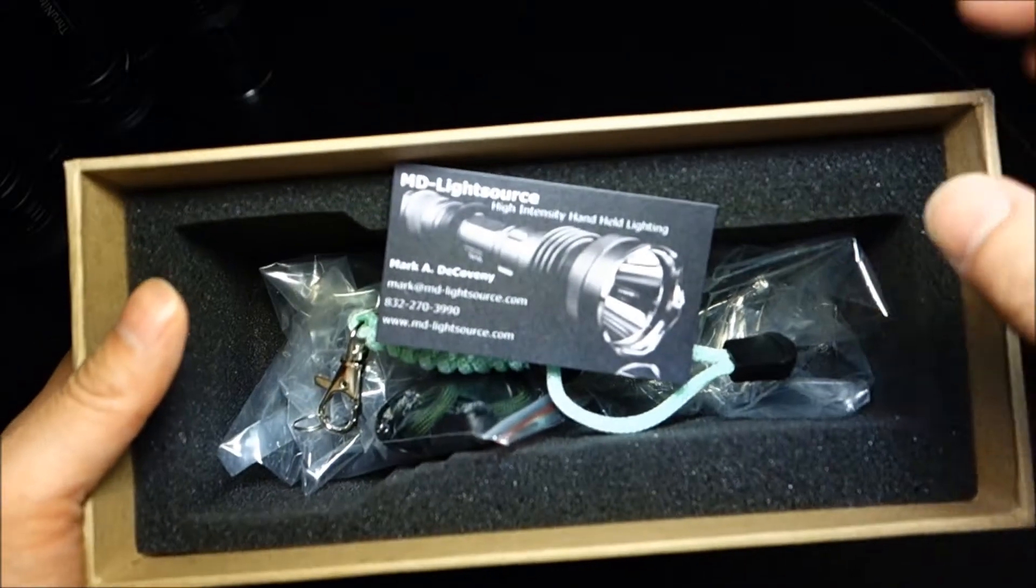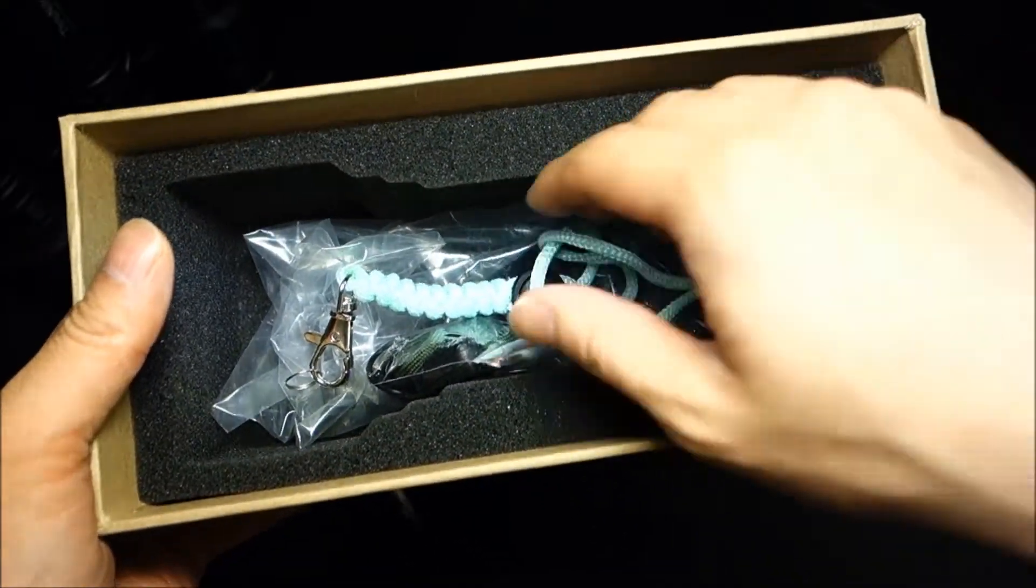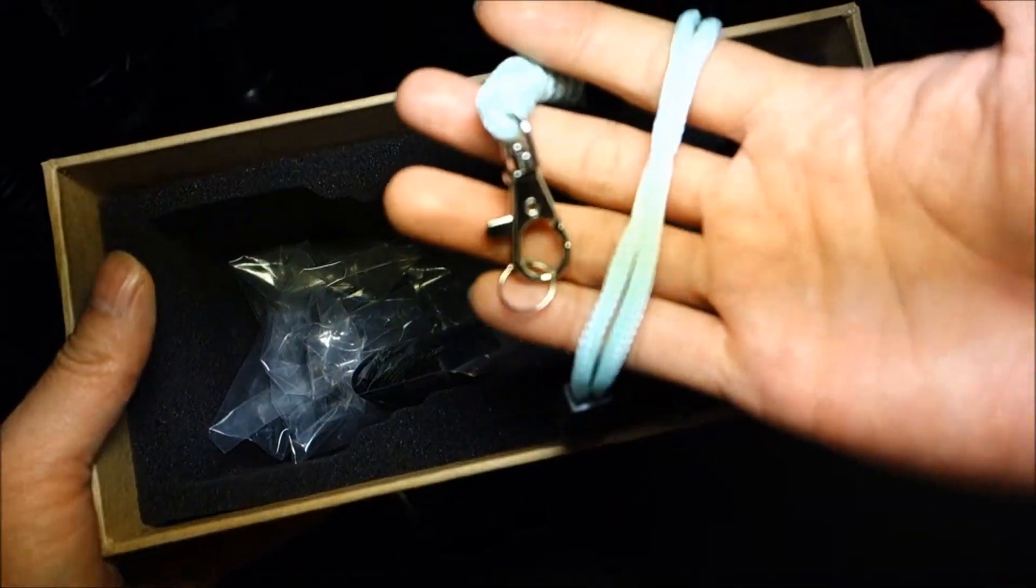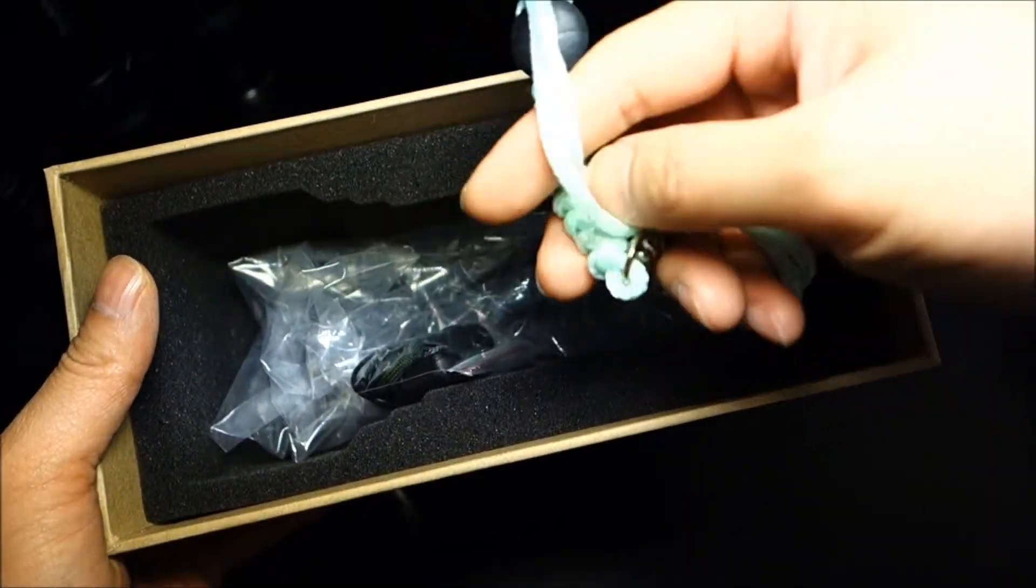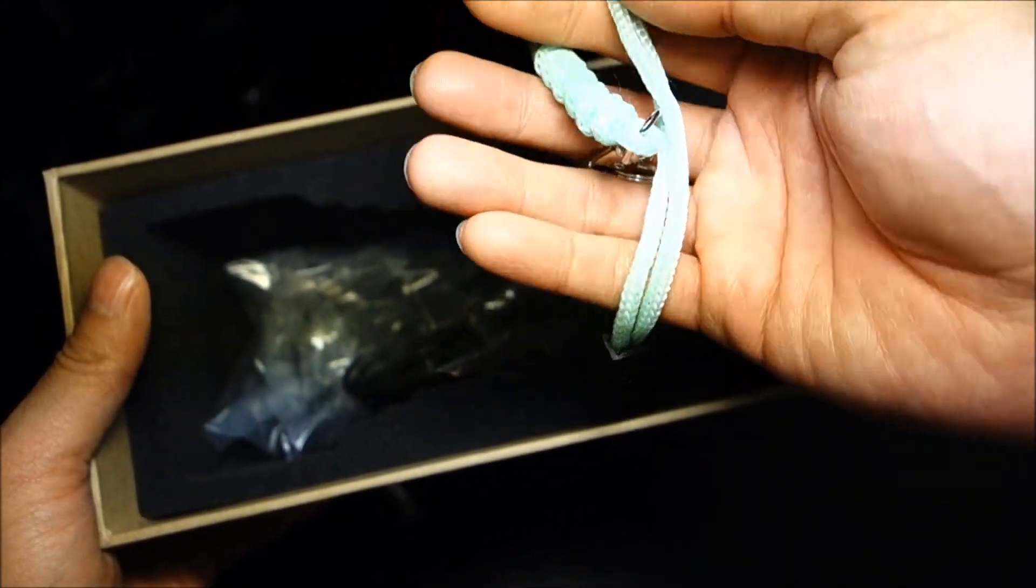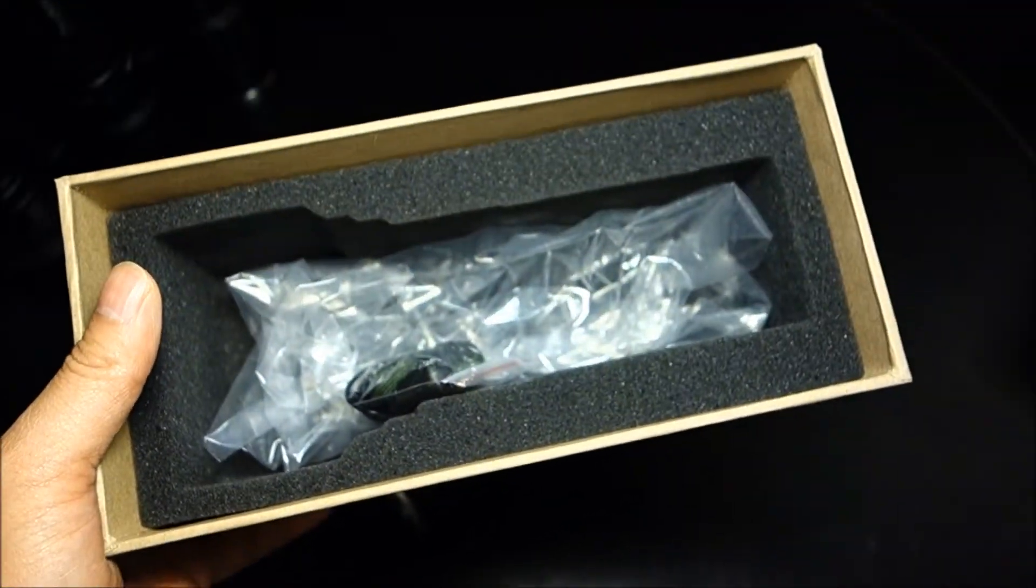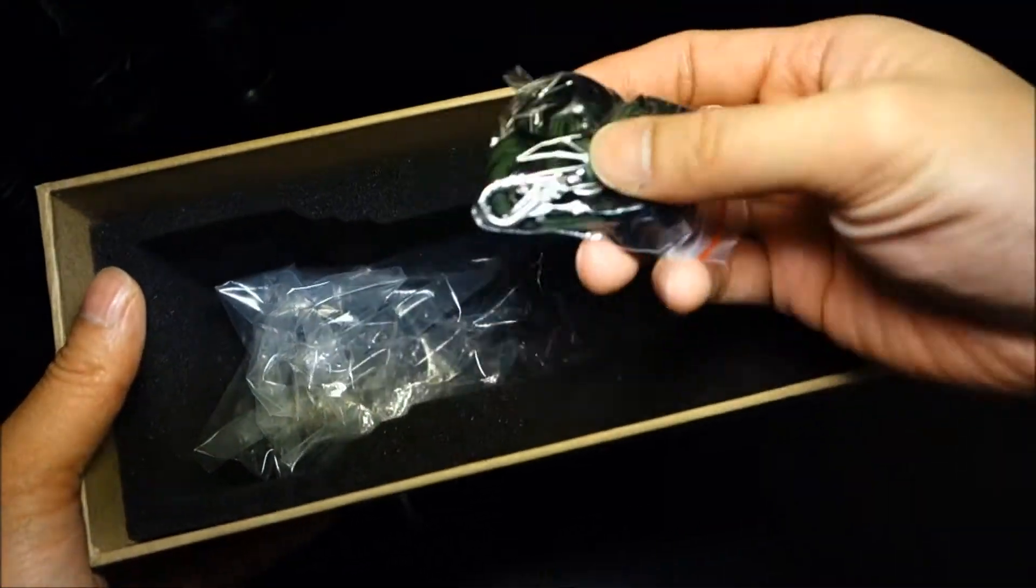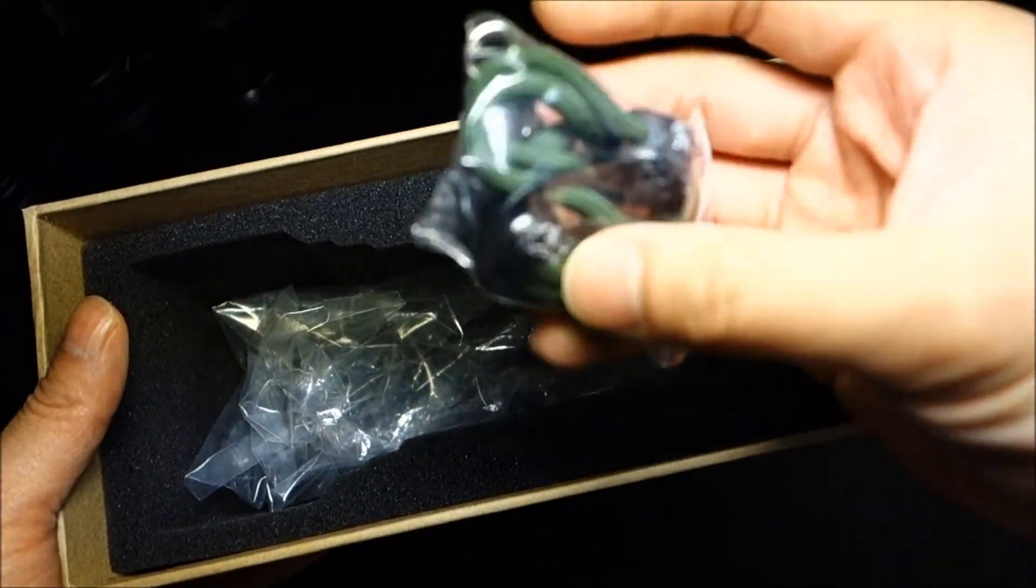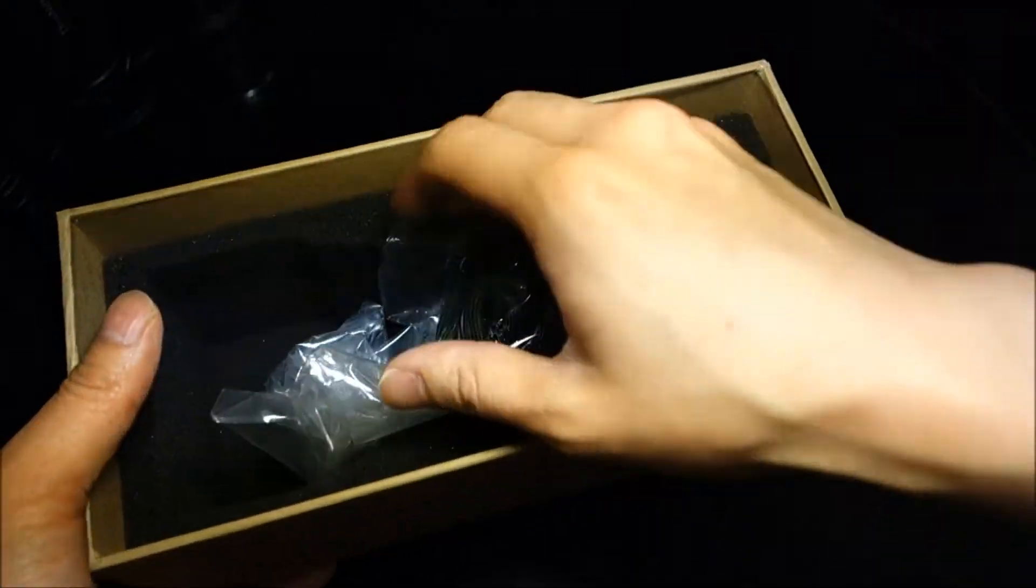Opening this up, this was provided by Mark from MDLightSource.com for review and he does carry these glow in the dark lanyards. So it's a pretty cool thing if you've ever seen it before. I won't be able to capture this on camera because the glow is fairly dim, at least in terms of the camera. But in terms of night adapted eyes, it's actually pretty cool. Now the 7G10 does come with a small accessory package that has spare O-rings and its own lanyard as well here. So beyond that, it's just packaging and cushioning.